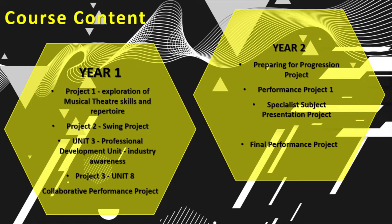Your preparing for progression project looks at your progression and supports you with your stage school and university applications, preparing you for auditions and looking at employment options. Year 2 Project 1 is a performance project in which you create an ensemble piece, usually a book musical. You will experience working with technicians and lighting, sound and AV, while also looking at costume and set requirements for the piece. You will also undertake a production role alongside your performance role.